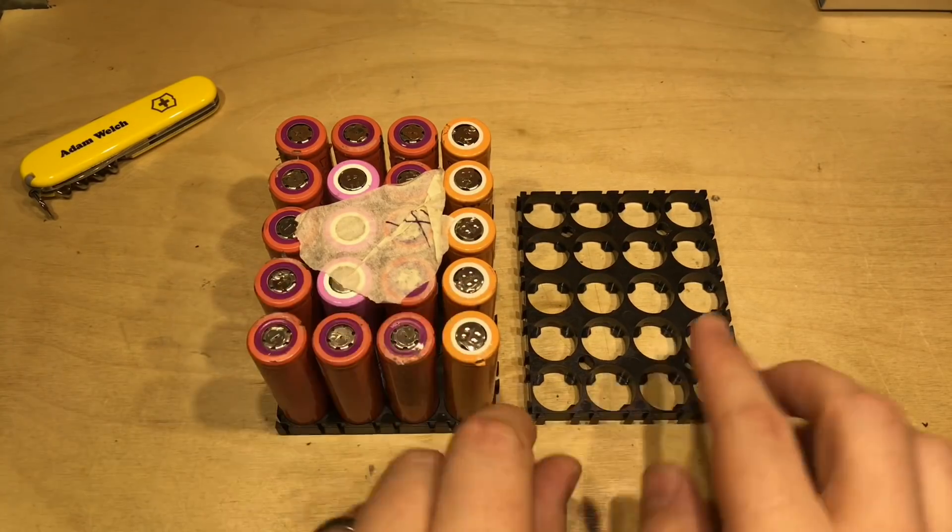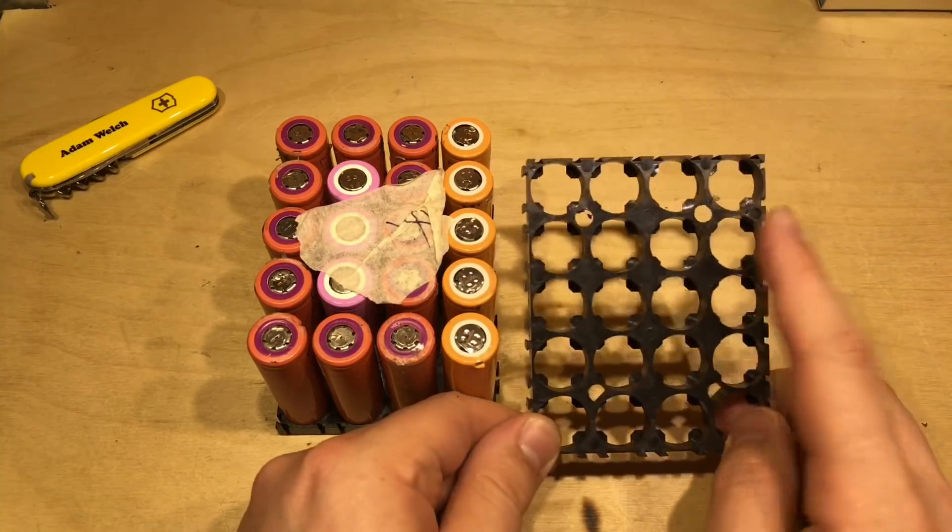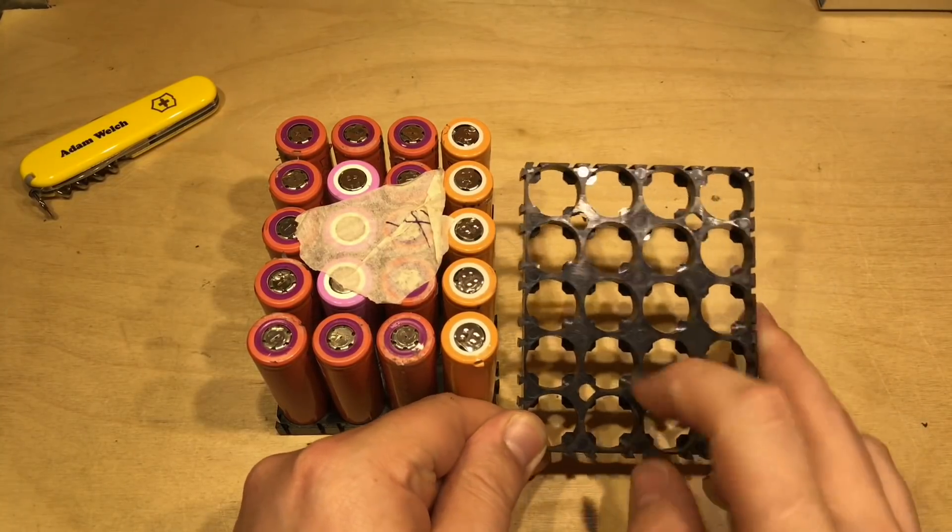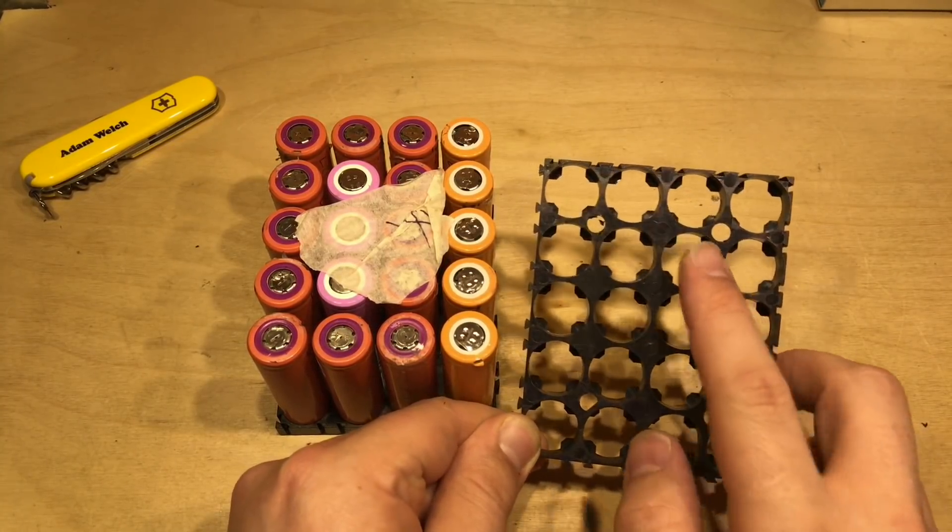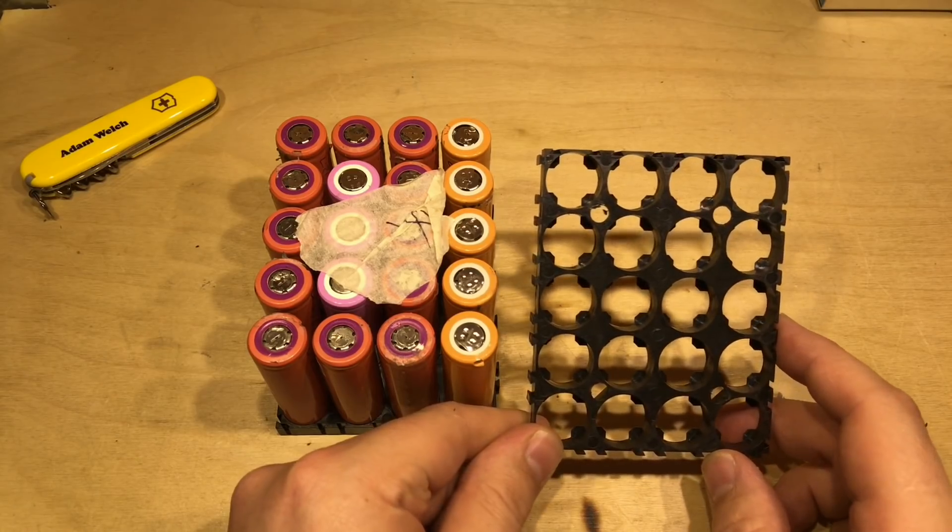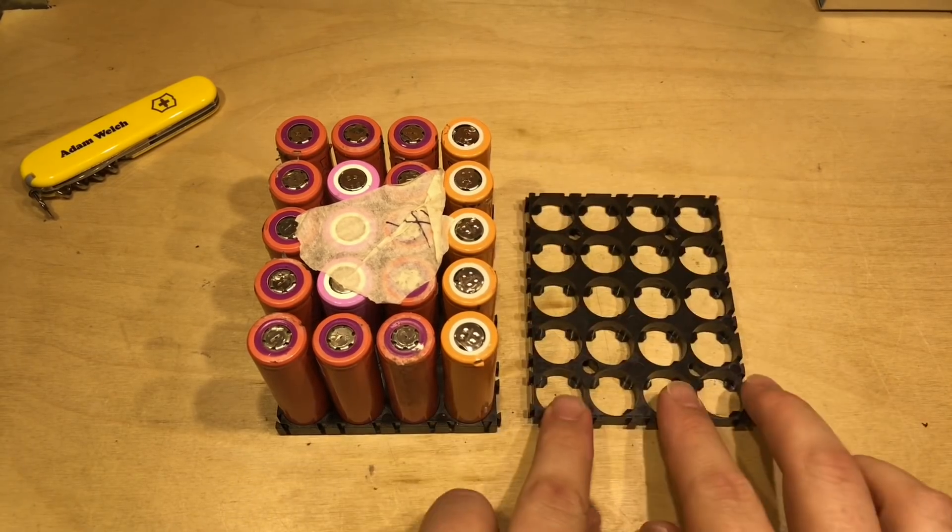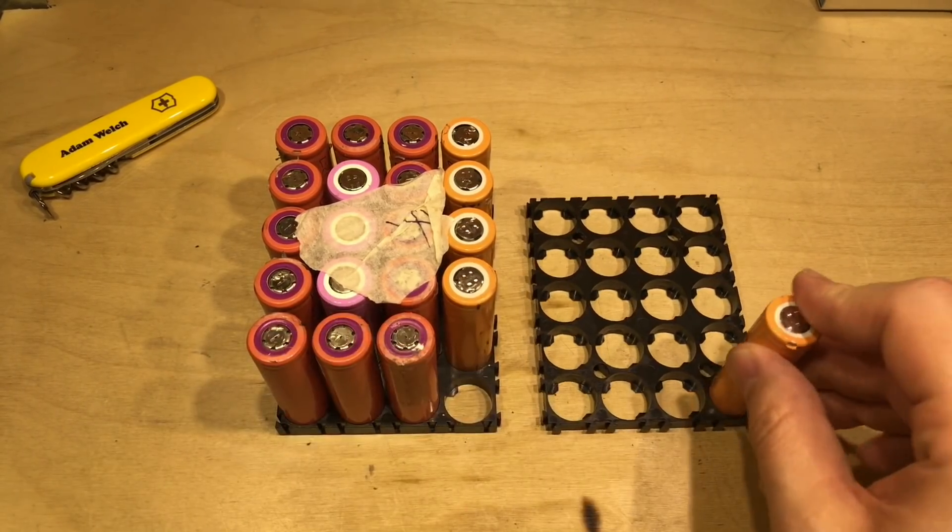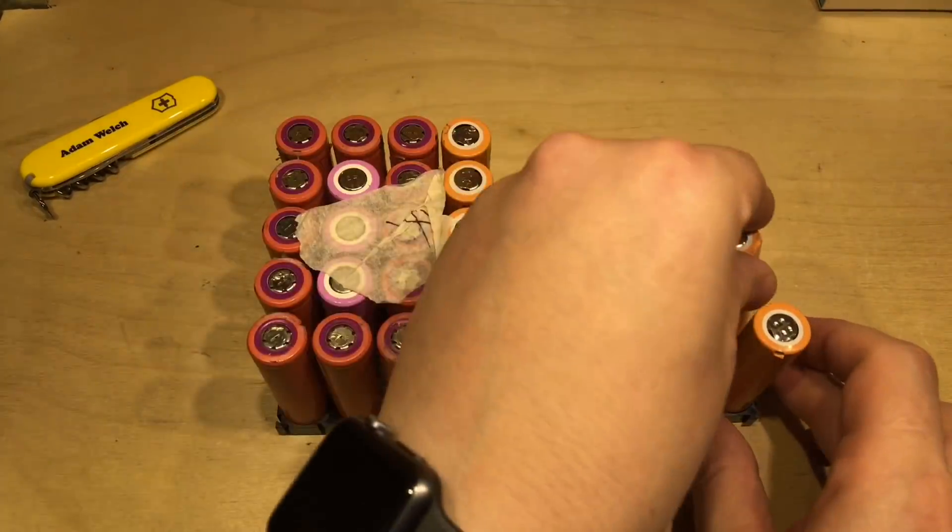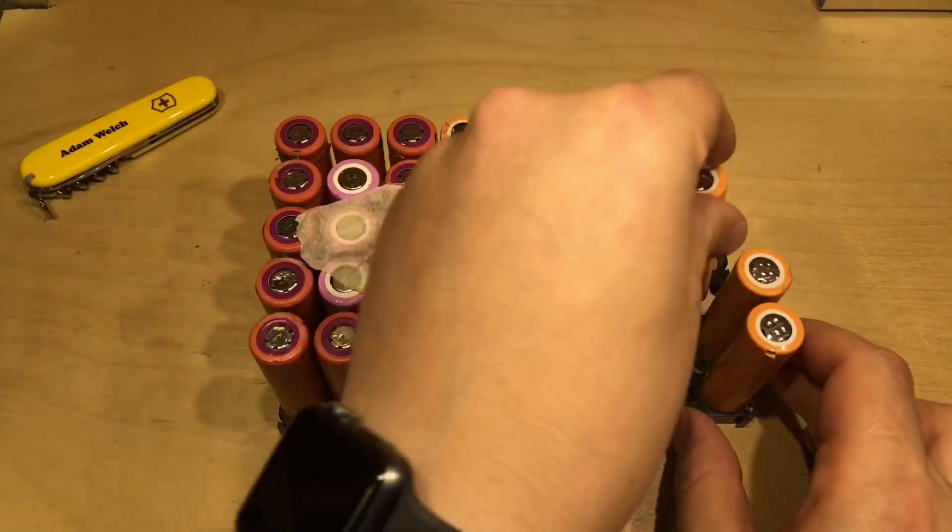Job number one is to move the cells over to this holder. I've already drilled some 5mm holes in this 4x5 18650 holder and the reason for that will become apparent later. For the meantime I'll just move all these over.